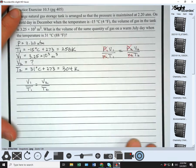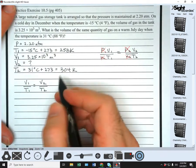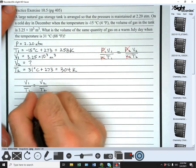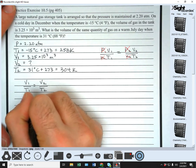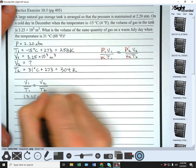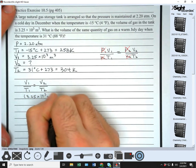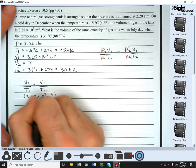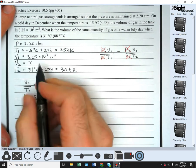Okay. Now we're just going to plug our stuff in. So we plug our stuff in. So V1 is 3.25 times 10 to the third meters cubed over T1, which is 258 K